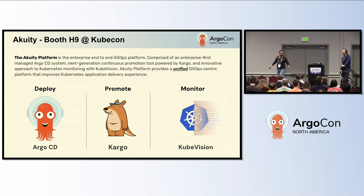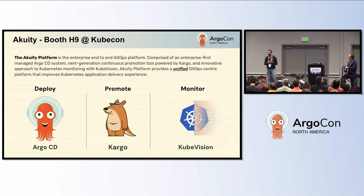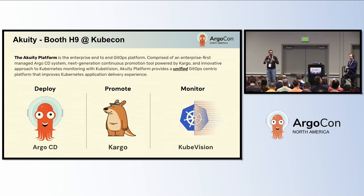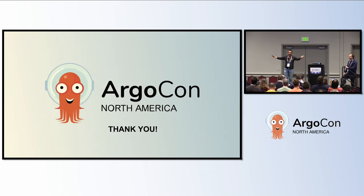To close out, being head of community at Acuity, we are building an end-to-end GitOps enterprise solution based on open source tooling — whether it's Argo CD, our new open source project Cargo, or our value-add tools like KubeVision. Come visit us at the booth. We'll also be at KubeCon all week at booth H9. Come talk to us and find out how we're building a platform using open source tooling. Thank you very much for listening to this keynote.